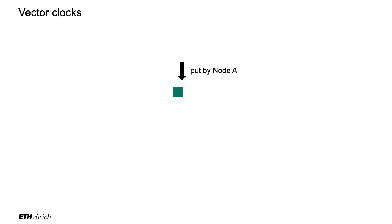The idea is that we have a system where we drop consistency, so at the same time you might have multiple values for the same key. We need a way to keep track of versions to understand which values come after what. In the easy linear case: I store a first value on node A with clock T=1, then update it to T=2. That's linear — there's a clear before and after, so you know the second version is newer and can discard the older one.